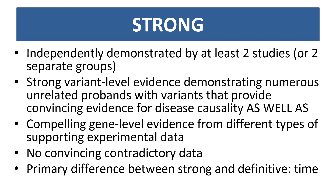Strong gene disease pairs are typically newer associations, for example made within the last three years. As long as no contradictory evidence emerges, strong gene disease pairs should move up to definitive after the allotted amount of time has passed.